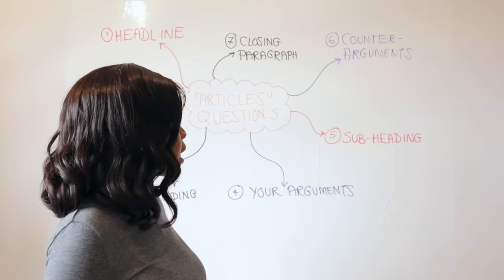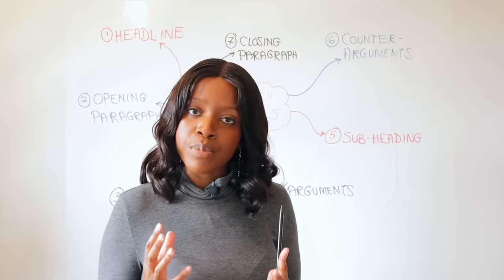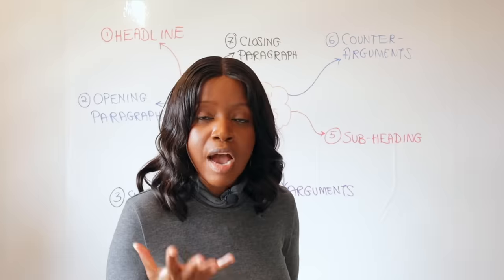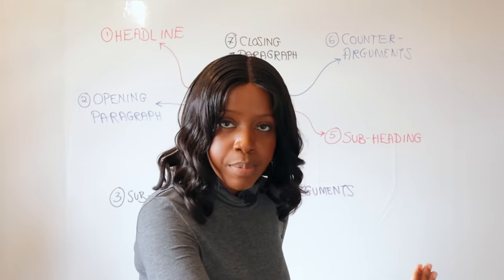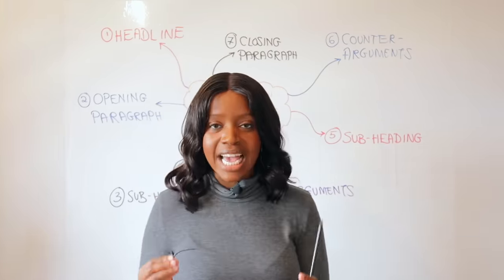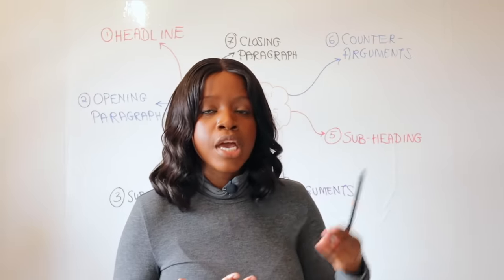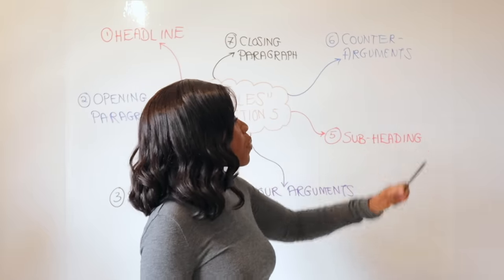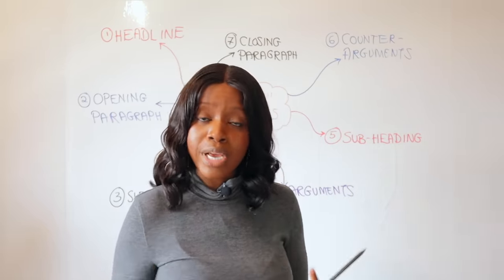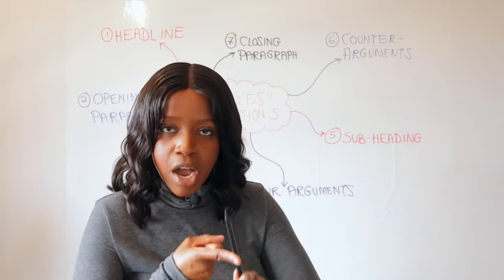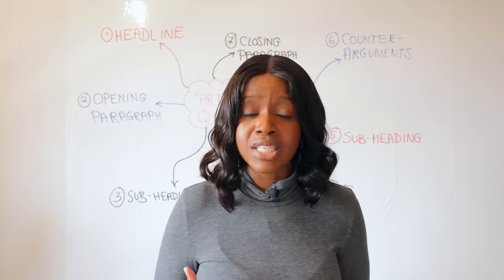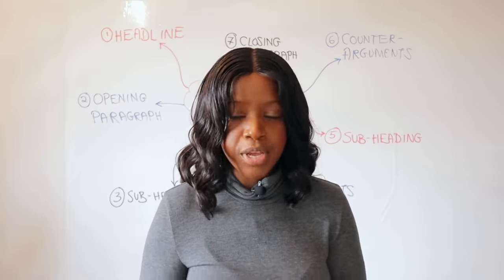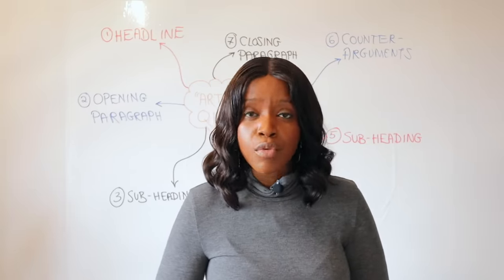Your argument and article are not complete yet, because you need to include another subheading — that's step five — where you present counter-points: why people would disagree with you. You can't only present your own perspective; you also have to show you've considered opposing views. In your subheading, hint at that — keep it brief, four to five words. You could use 'Travel is expensive' or 'Travel is foolish.' Then add one to two paragraphs with one to two reasons why people would disagree with you. These are counter-arguments, and again include an anecdote, a statistic, and examples.